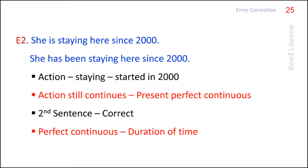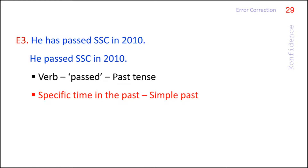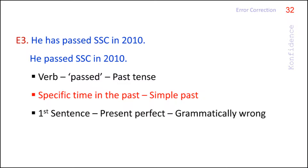All perfect continuous tenses indicate the duration of time, so they carry either 'since' or 'for' with them. In the third example, the verb is past tense and the action took place in 2010. When a specific time in the past is mentioned, the verb should be in simple past. The first sentence is in present perfect, which is grammatically wrong. As the time of the past action is mentioned, the second sentence makes sense.